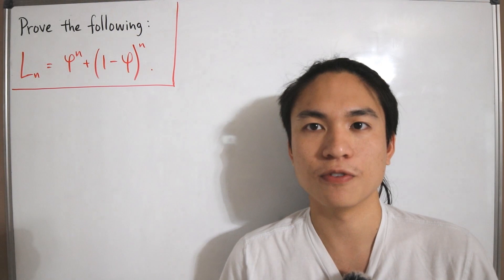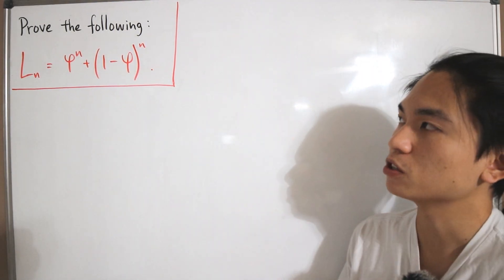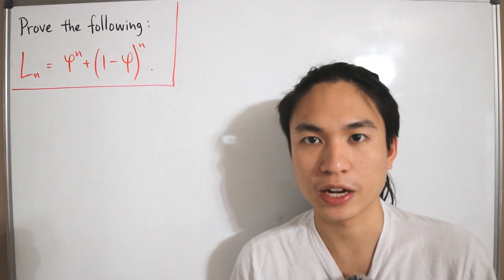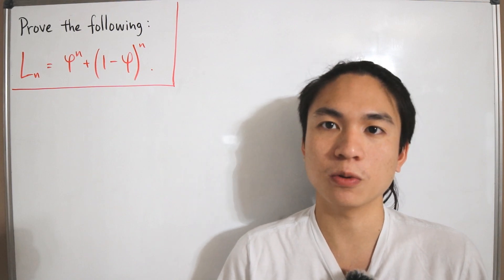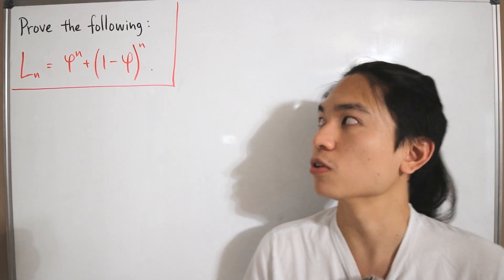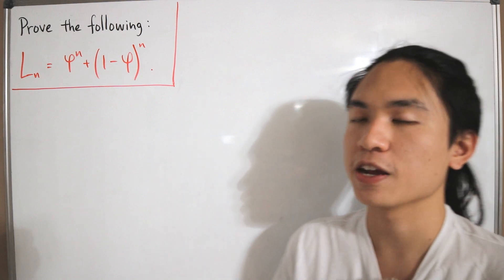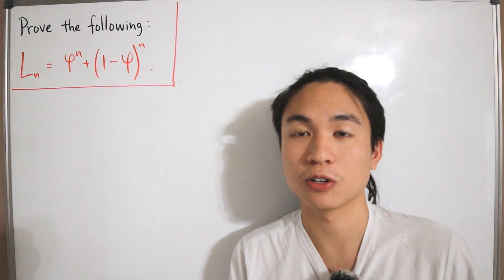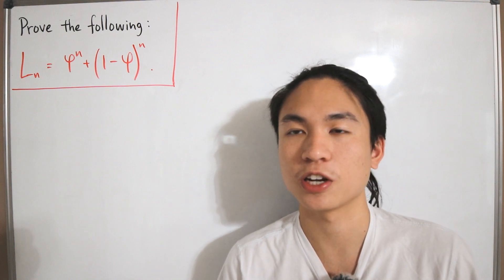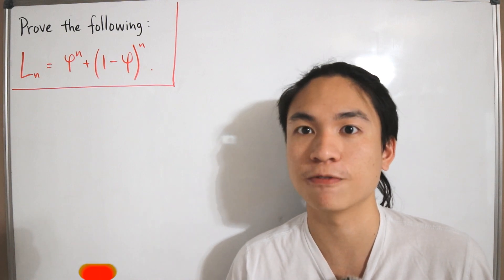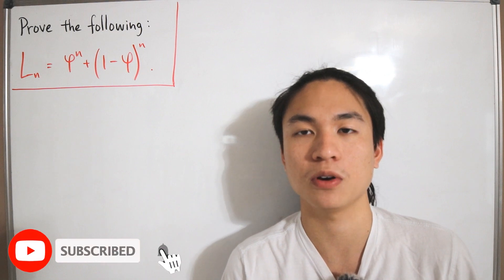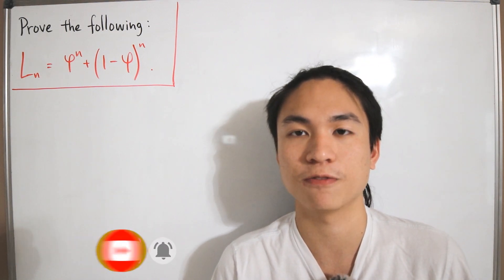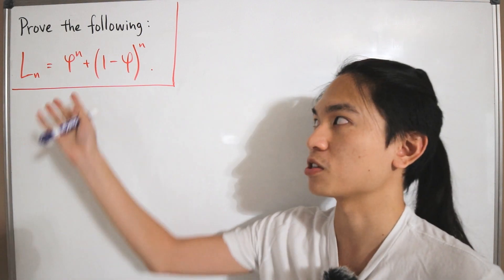We want to prove that L_n, the nth Lucas number, is equal to phi to the power n plus (1 minus phi) to the power n. This formula is Binet's formula for Lucas numbers, similar to Binet's formula for Fibonacci numbers, which I proved in a previous video.